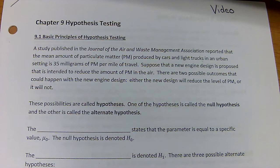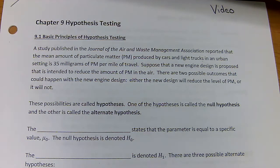Today we're going to start talking about something called hypothesis testing. A study published in the Journal of the Air and Waste Management Association reported that the mean amount of particulate matter produced by cars and light trucks in an urban setting is 35 milligrams of PM per mile of travel.